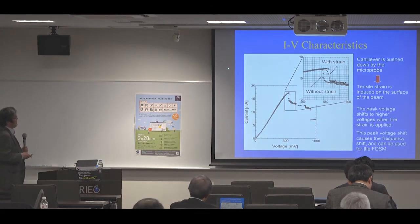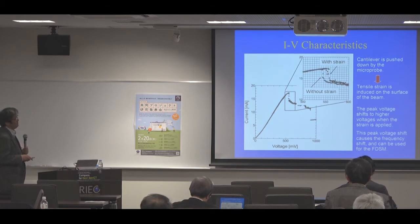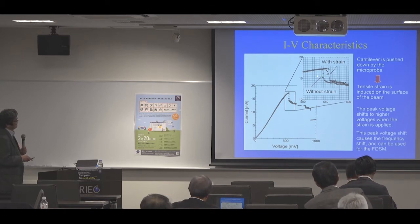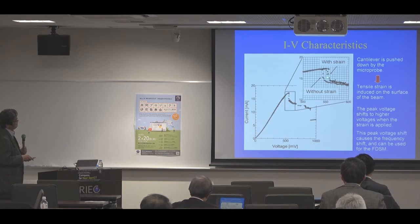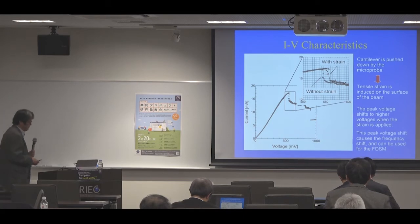This is an example of the IV characteristics of the fabricated RTD. We measured the IV characteristics while pushing down the cantilever by microprobe. Tensile strain is induced on the surface of the beam on the RTD. You can see a peak voltage shift to higher voltages when strain is applied. This peak voltage shift causes a frequency shift and can be used for the FDSM.